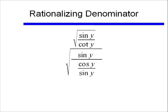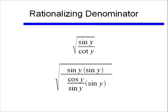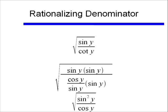Well, I remember to get rid of complex fractions, I'm going to multiply my numerator and my denominator by the LCD, which in this case is just sine y. So if I multiply my numerator and my denominator by sine y, then I end up with sine squared y over cosine y. Okay that's taking me from the square root of sine y over cotangent y down to square root of sine squared y over cosine y.